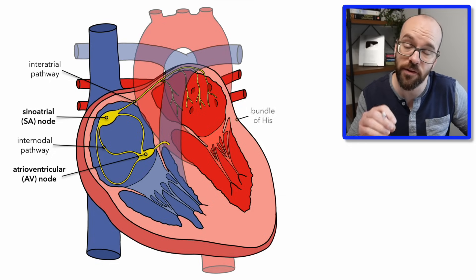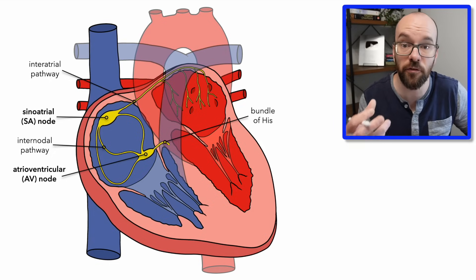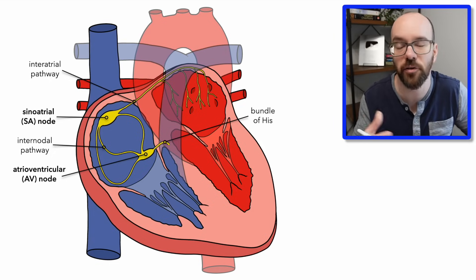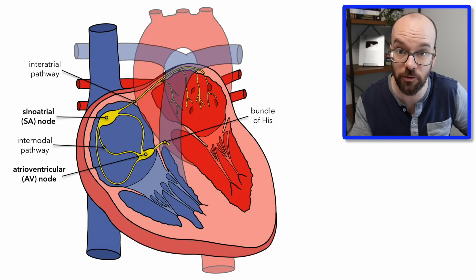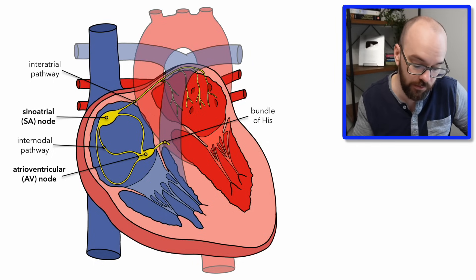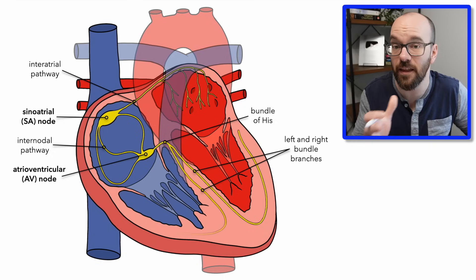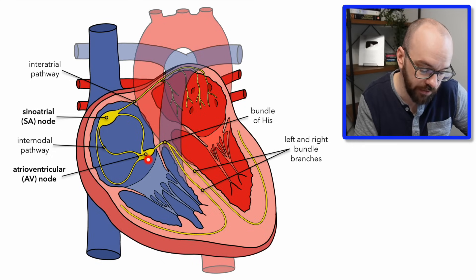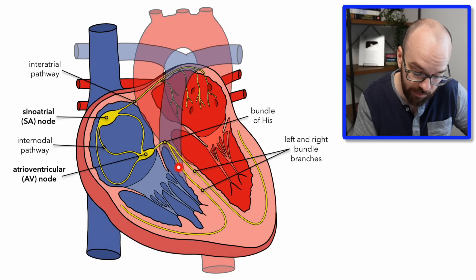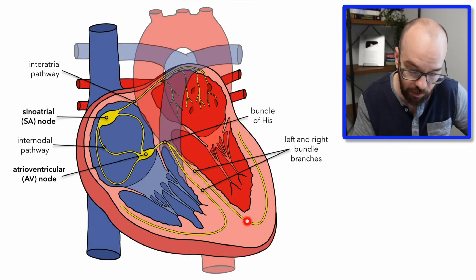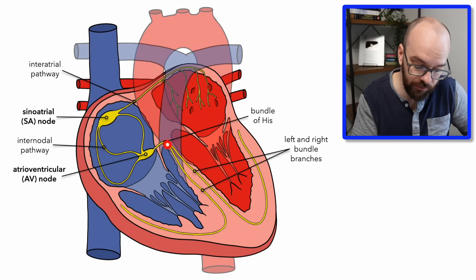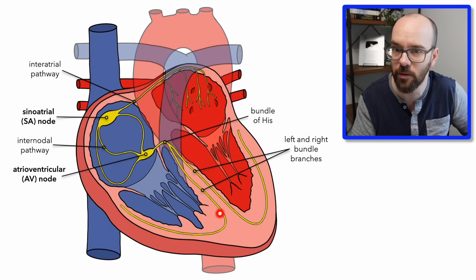From the AV node the signal passes into the bundle of His, also known as the atrioventricular bundle, which immediately separates into the right and left bundle branches. Unlike the AV node, the bundle of His and bundle branches transmit the signal very quickly down the septum of the heart. As the signal travels through the septum it's not stimulating the ventricles to contract just yet.